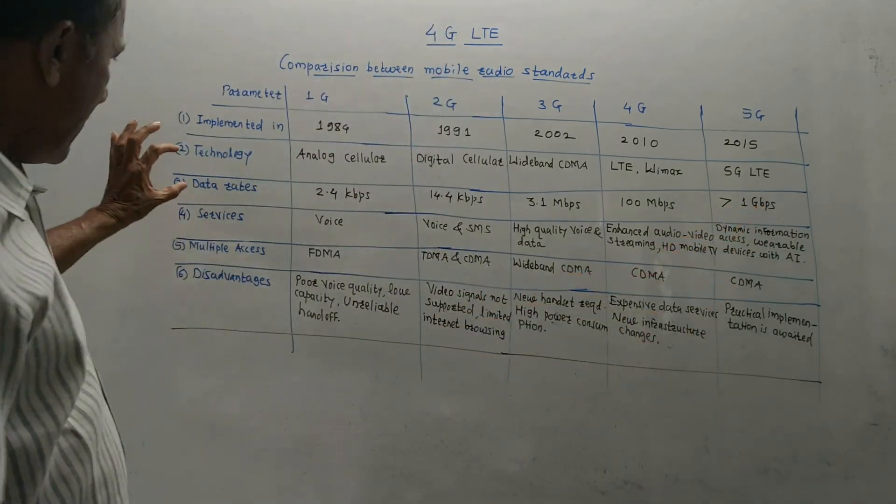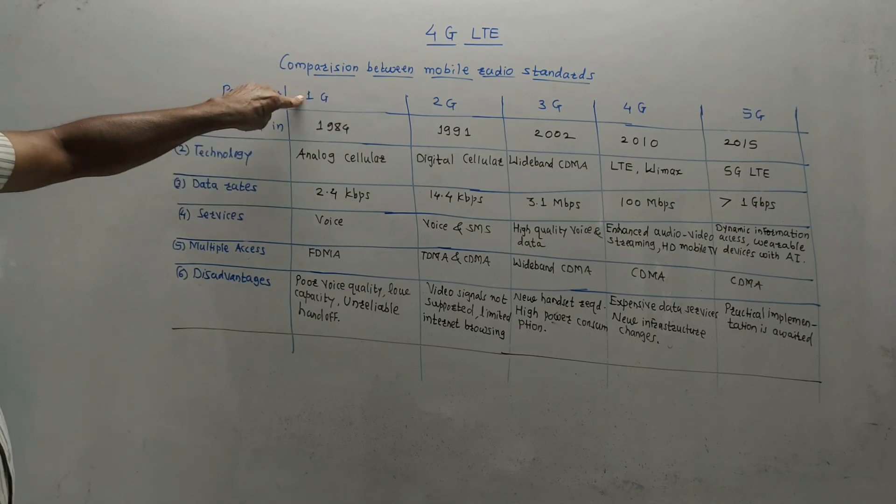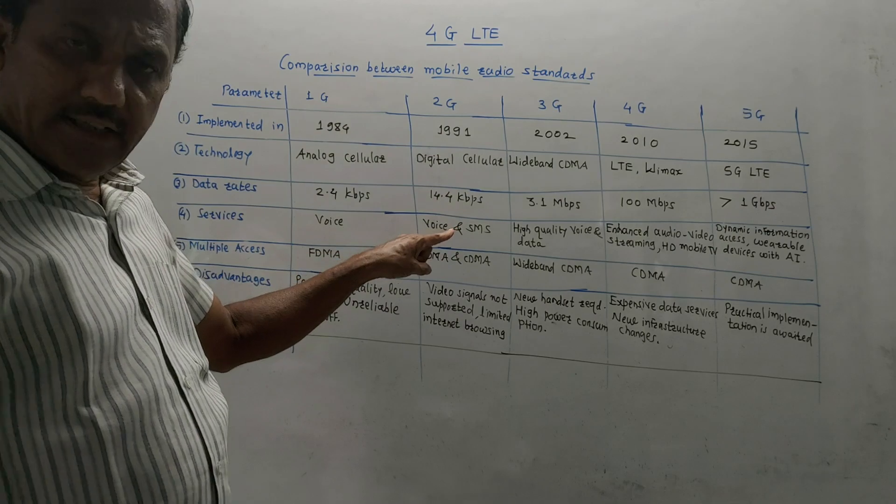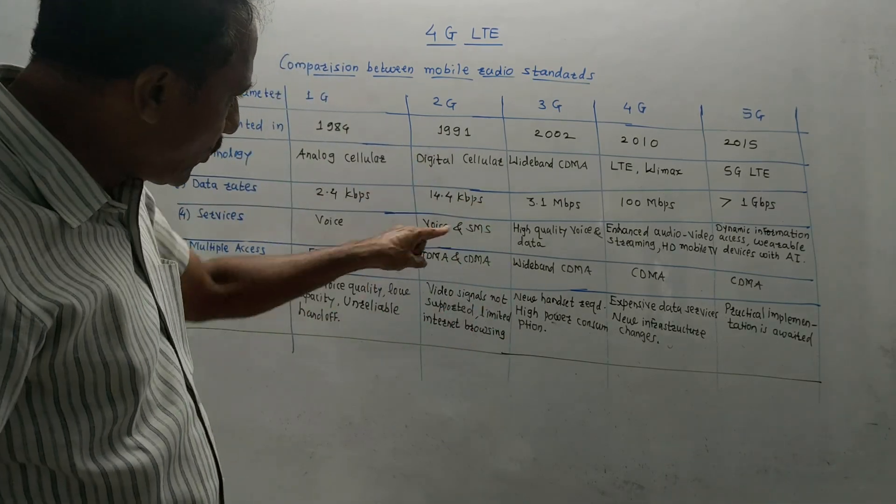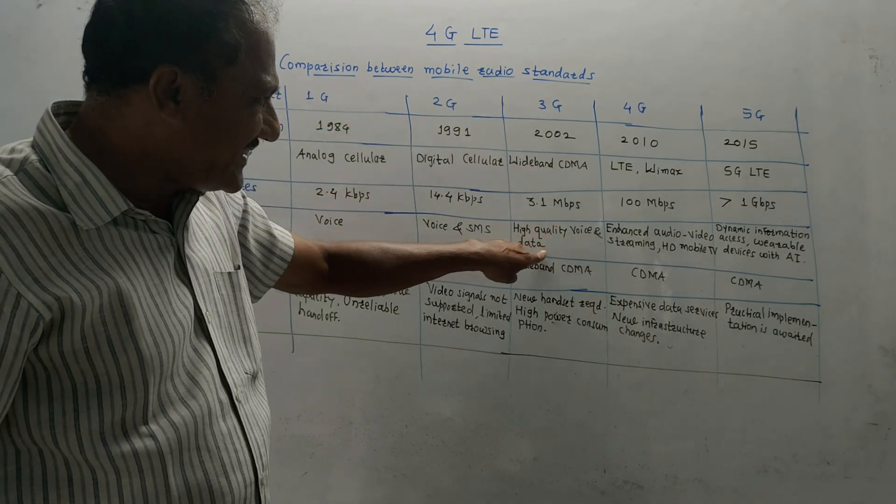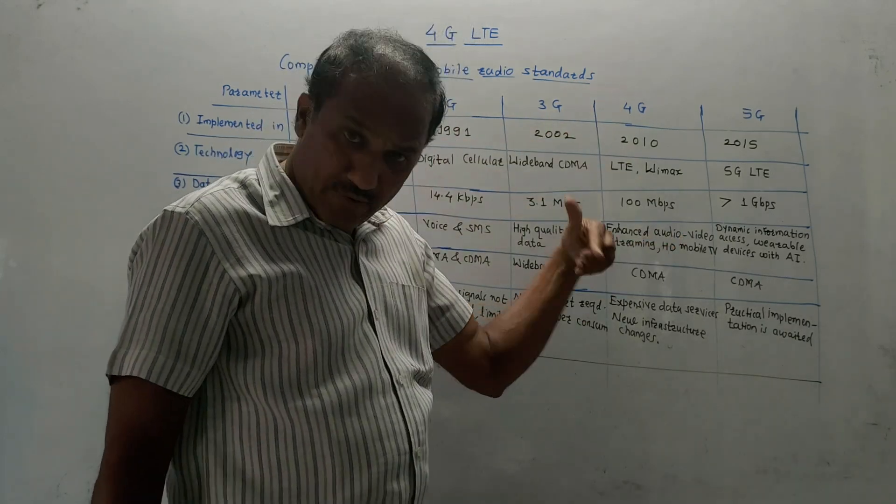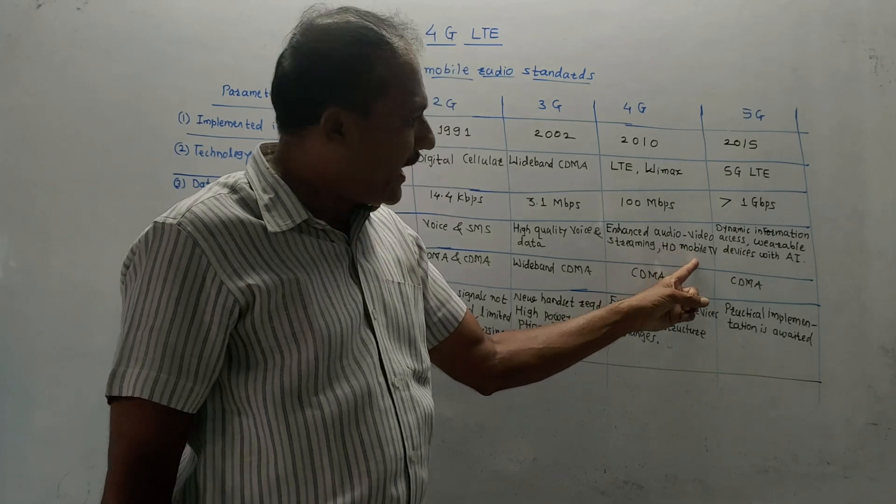Different services offered by different generations: In first generation, only voice service was offered. In second generation, along with voice, people were in a position to make use of SMS. Third generation: high quality voice and data services. Fourth generation: enhanced or advanced audio video streaming technology, HD mobile TV, and so on.